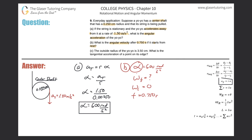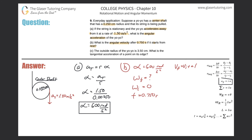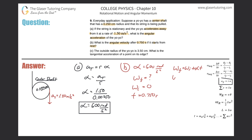With acceleration, final velocity, initial velocity, and time, you probably remember from linear kinematics that final velocity equals initial velocity plus acceleration times time. The rotational version is the same formula but with angular variables: final angular velocity equals initial angular velocity plus angular acceleration times time.